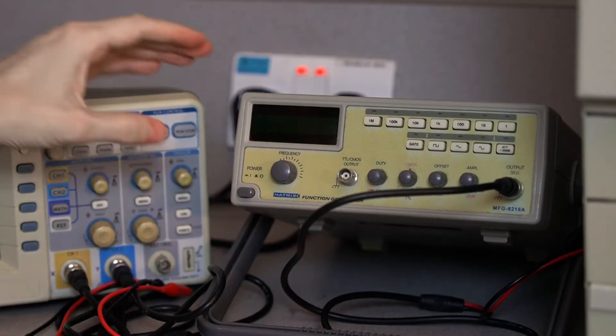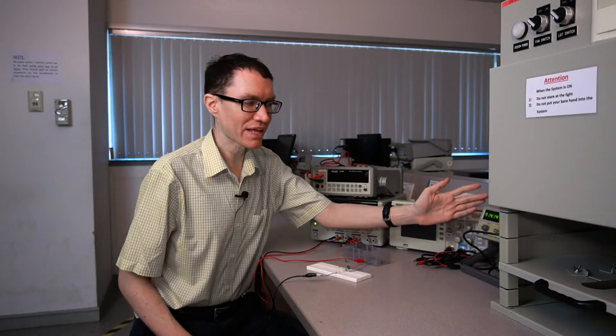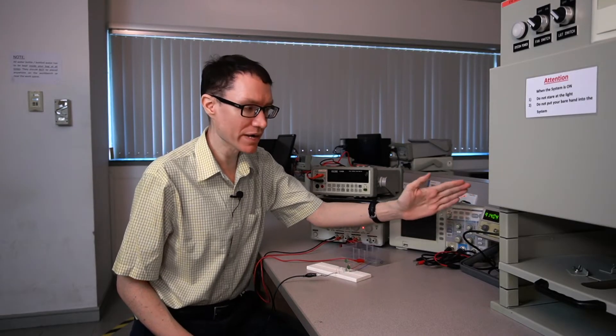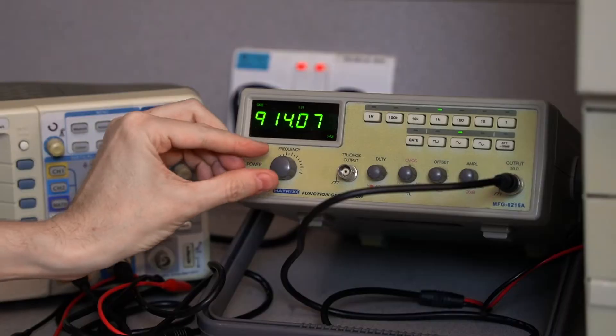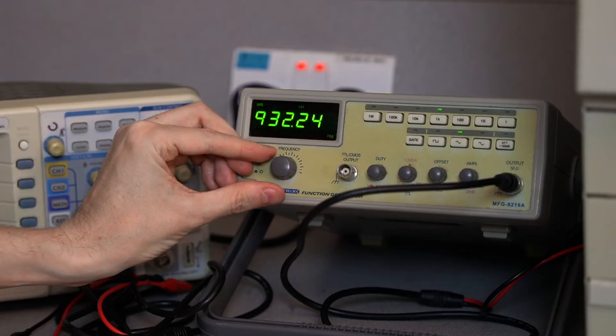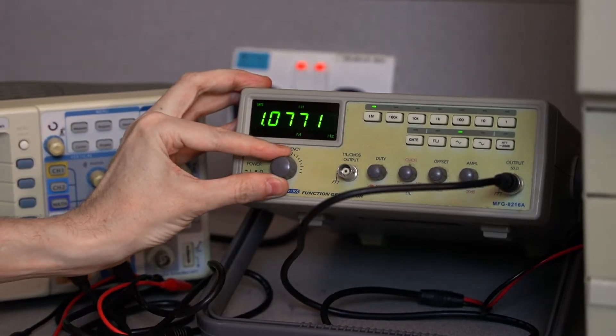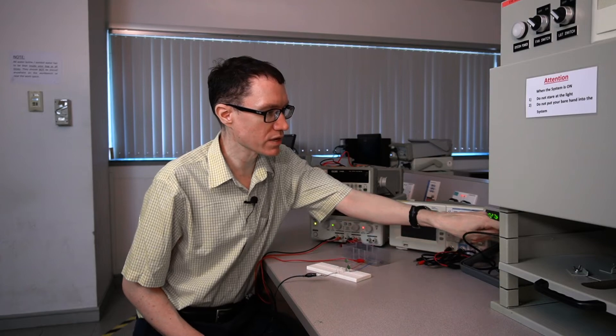Because we plan to design a Colpitts oscillator operating at a megahertz, let's test our amplifier at the same frequency. I'm going to change the frequency to a megahertz, or as close as I can get, and make it a sine wave.